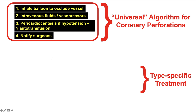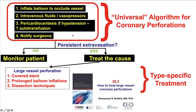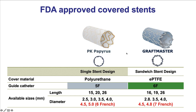The fourth step of the universal algorithm is to notify the cardiac surgeons. Cardiac surgery is infrequently needed during coronary perforations; however, giving them early notice may facilitate subsequent management if cardiac surgery is indeed needed to achieve hemostasis. After those steps are done, subsequent treatment depends on the mechanism of the perforation. If we have a large vessel perforation, the treatment in most cases is a covered stent, although sometimes prolonged balloon inflations and other techniques can help seal the perforation. Currently, there are two covered stents in the United States: the PK Papyrus and the Craftmaster.